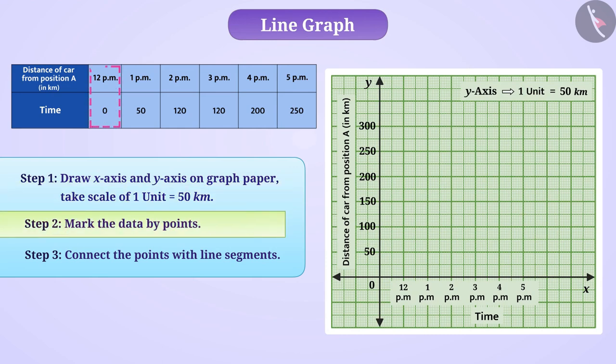At 12 o'clock, the distance of the car from position A is 0 kilometers. So, we will mark the point at the intersection of the vertical line at 12 o'clock and the horizontal line representing 0 kilometers.